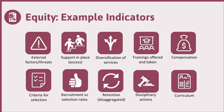There are lots of indicators to examine equity: looking at external factors or threats and how they may differ across various groups, looking at supports that are in place or access for a variety of groups, looking at the diversification of services depending upon need or population, looking at the diversification of experience, education, and requirements, and looking at the trainings that have been offered and taken by programmatic or project staff. Also looking to see if there are differences in compensation — who gets paid what, or who gets recognized for what.